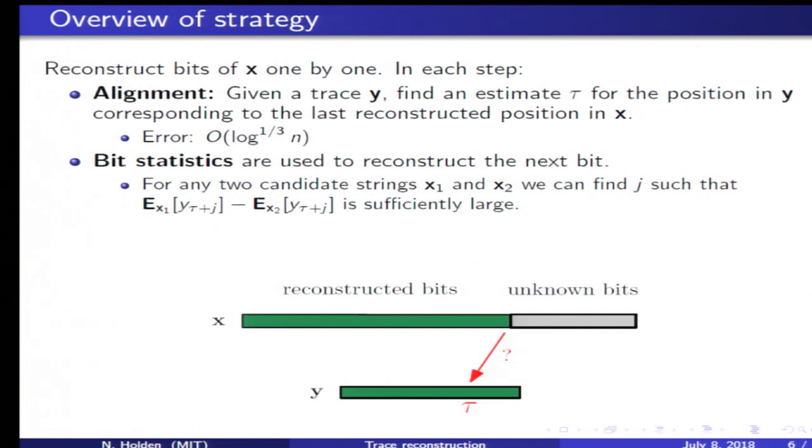If we compare this outline with the case of small deletion probability q less than a half, it is particularly the alignment step which needs to be modified in the case of high deletion probability. I will focus only on the alignment step in the remainder of the talk.